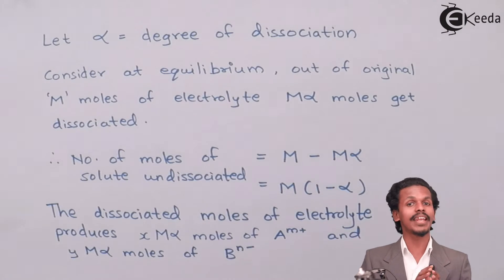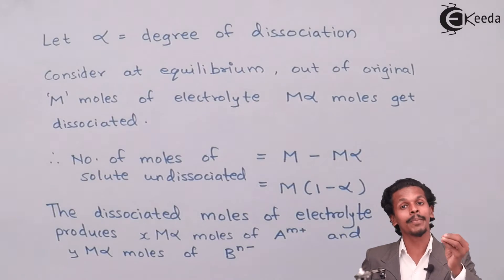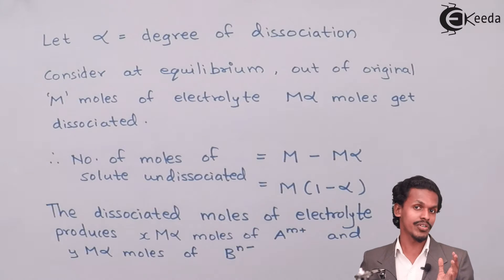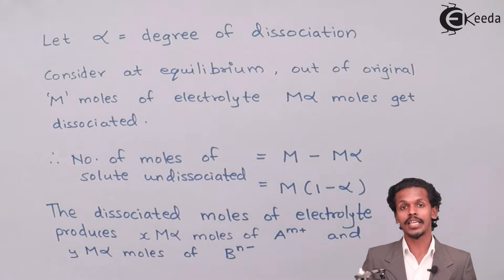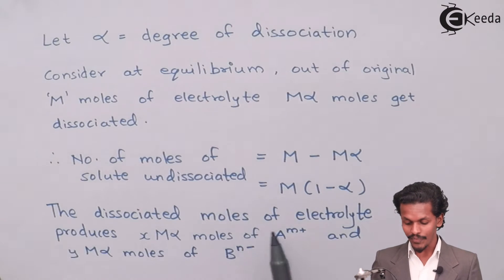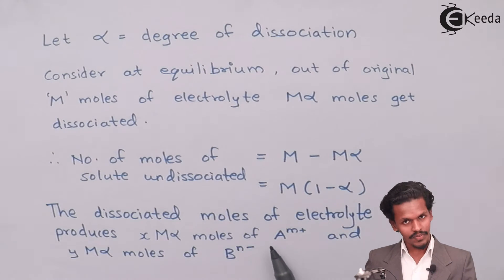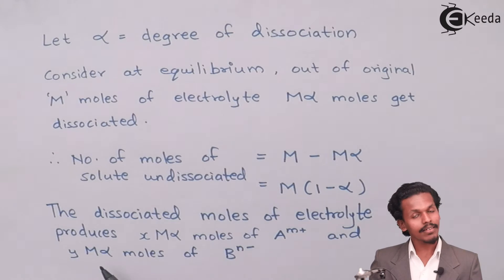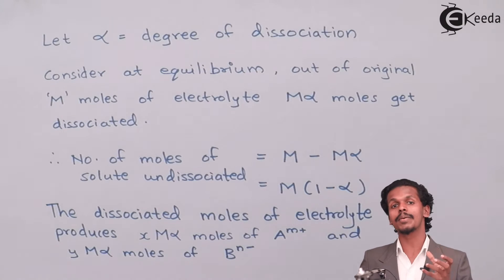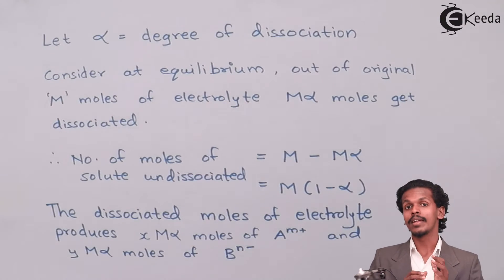The dissociated part will correspond to ions A^(M+) and B^(N-). The dissociated molecules of the electrolyte will produce X·M·α moles of A^(M+) and Y·M·α moles of B^(N-). This is the part of the electrolyte that will be dissociated into cations and anions in solution.